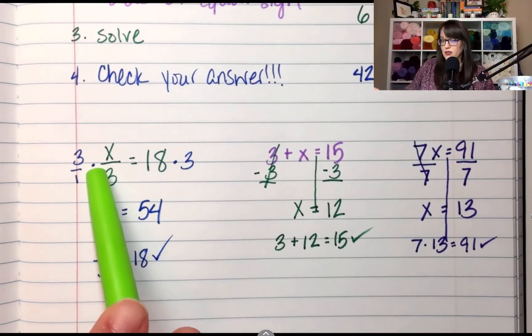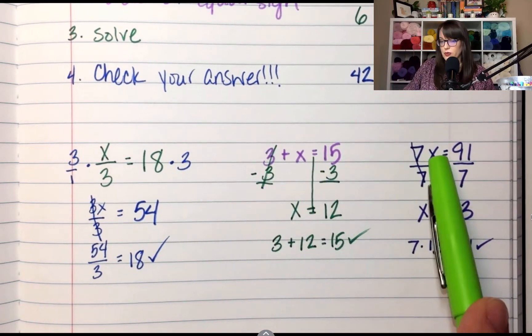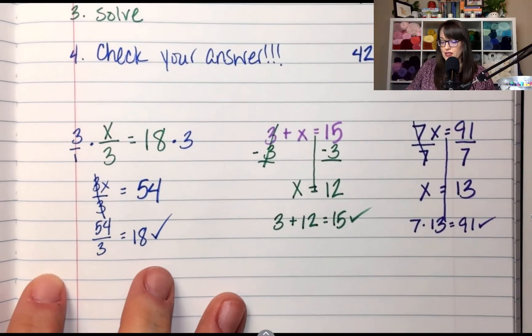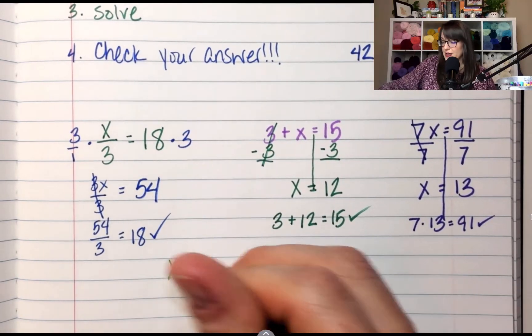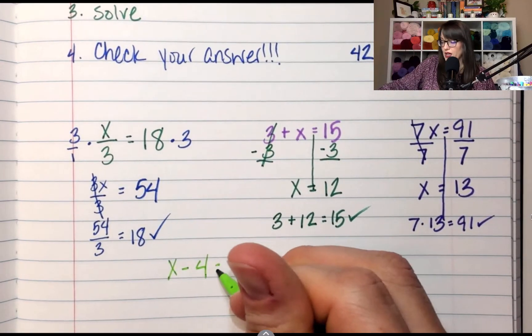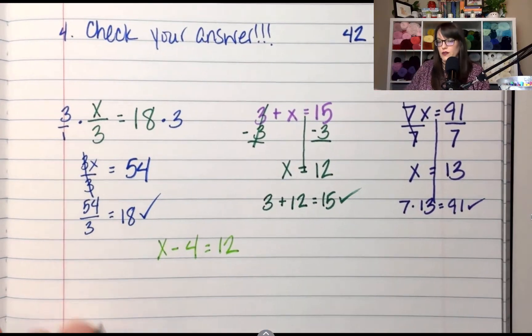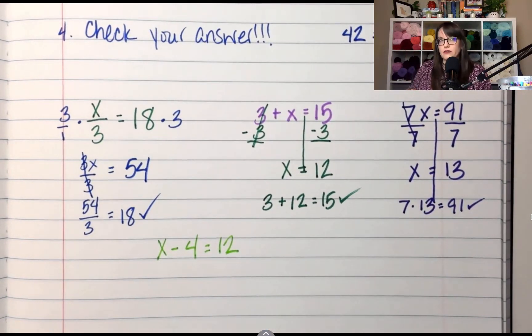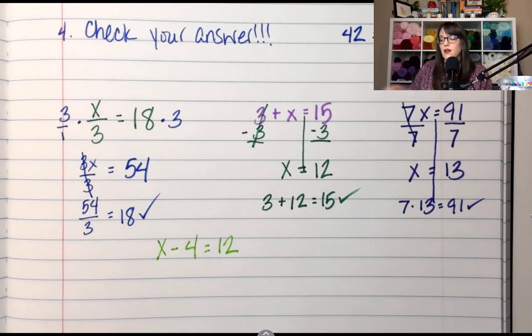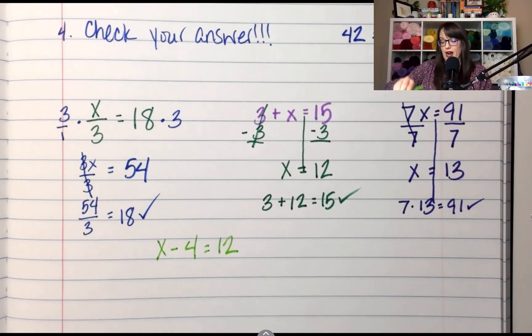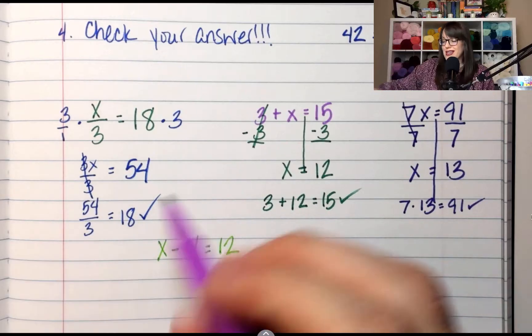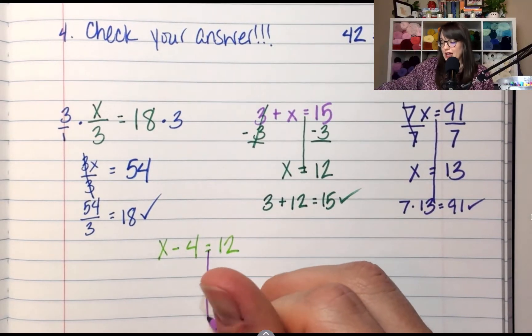All right, last example. We did division, we did addition, we did multiplication. The only thing left is subtraction. If I have X minus 4 equals 12, X minus 4 equals 12, what's the operation? It is subtracting 4. What is the opposite of subtracting 4?